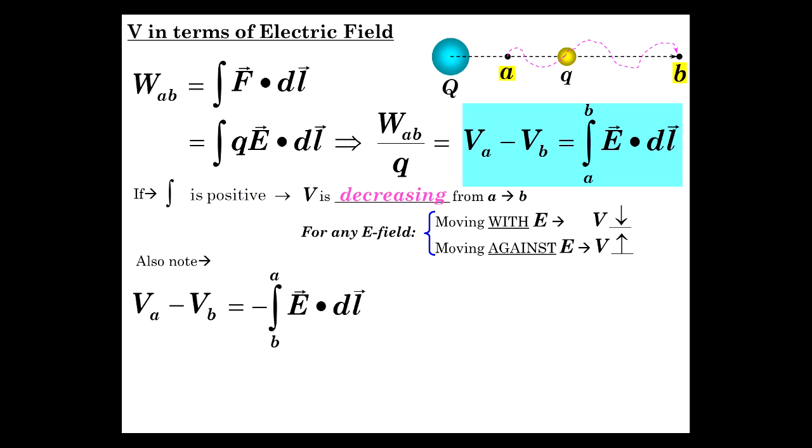Now, VA minus VB is also equal to the negative integral from B to A, flipping the limits of E dot DL. And what that really is corresponding to is the work per charge by an external force to move the little charge from B back to A.